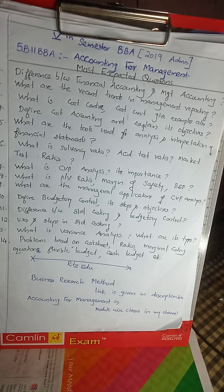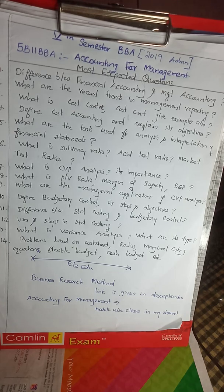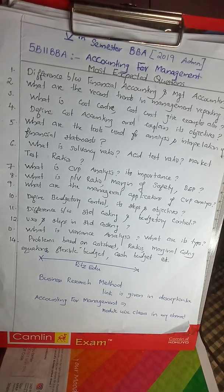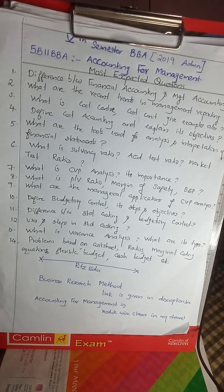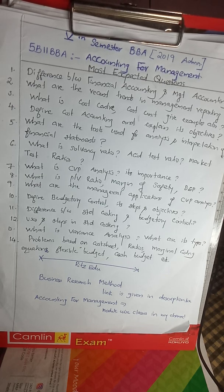What is cost center and cost unit? Cost center is a department, product, location, or item of equipment for which cost may be ascertained and used for the purpose of cost control. Cost unit is a unit of measurement — for example, kilogram, litre, bed capacity, milliliter, kilowatt hour, passenger kilometer.